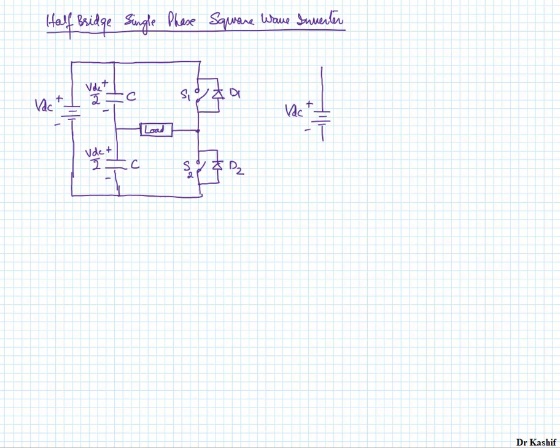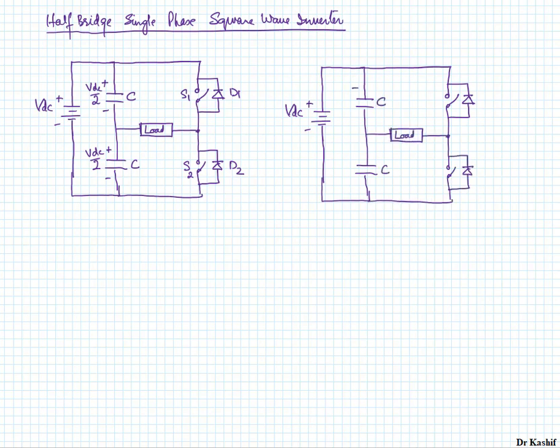Let's draw the circuit again to understand the working of this half-bridge inverter circuit, which is basically converting DC into a square waveform — a very basic AC waveform. Now, if switch S1 is turned on by the application of the gate pulse, the current will flow in the loop as shown in red. The capacitor will be charged to Vdc/2.